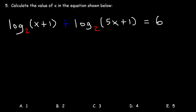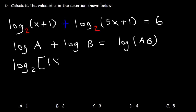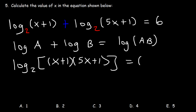Number five: calculate the value of x in the equation shown below. If you recall, log A plus log B can be combined into a single log by multiplying A and B. So we're going to have log base two of x plus one times five x plus one, and all of that should equal six.